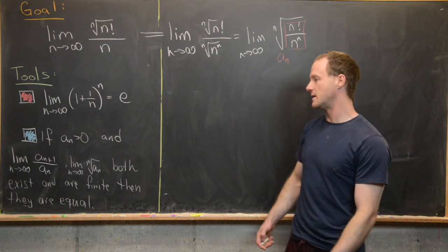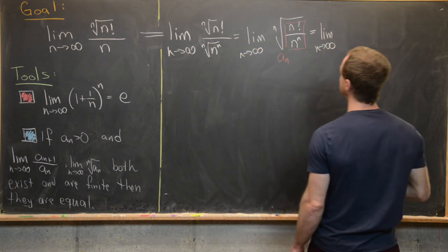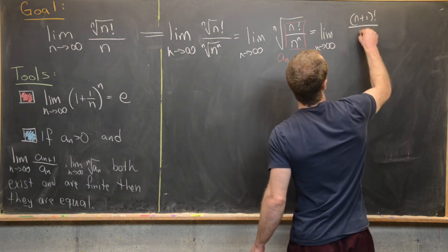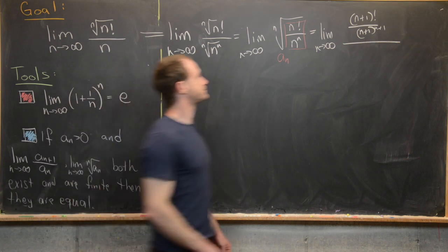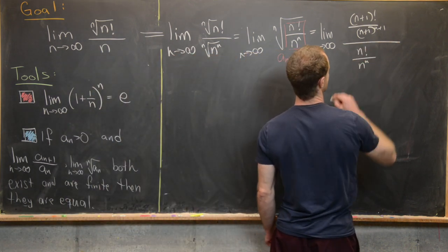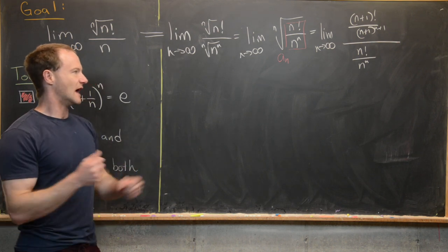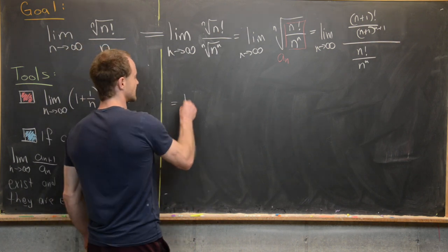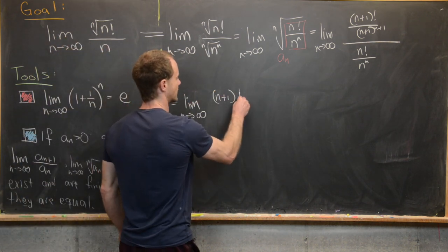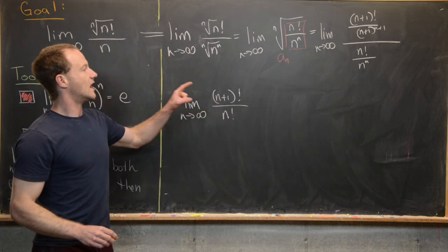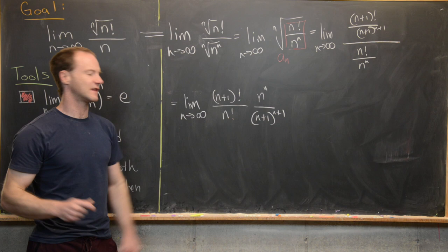By our second tool, this limit equals the limit as n goes to infinity of a_{n+1} over a_n. So we write: a_{n+1} equals (n+1)! over (n+1)^{n+1}, divided by a_n which is n! over n^n. Rearranging so like terms are grouped, we get the limit of (n+1)! over n! times n^n over (n+1)^{n+1}.